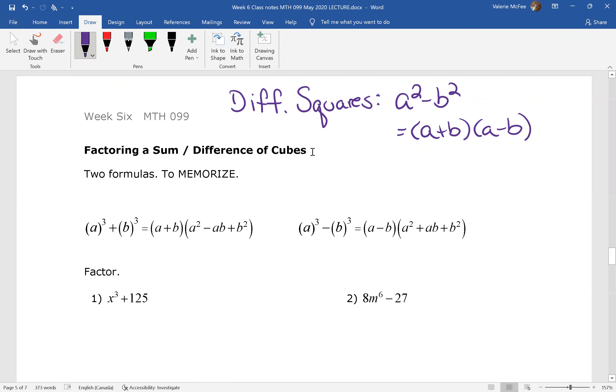So today we want to look at a sum or difference of cubes. Not squares, a sum or difference of cubes. So that means we're going to be looking at a³ + b³. Now notice that this is not (a + b)³. That's something different. That's a completely different formula we'd be looking at. a³ + b³ and a³ - b³.